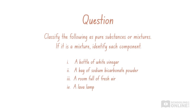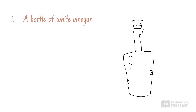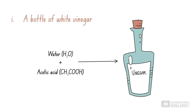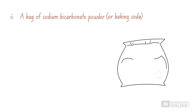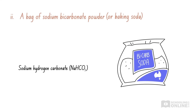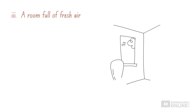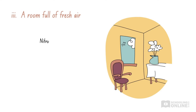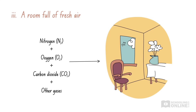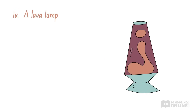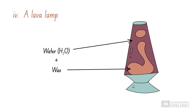A bottle of white vinegar contains liquid water and aqueous acetic acid. Therefore, white vinegar is a mixture. Sodium bicarbonate and baking soda are household names for sodium hydrogen carbonate. This is a solid compound made from several elements chemically combined. Therefore, sodium bicarbonate powder is a pure substance. A room full of fresh air contains different gases, including nitrogen, oxygen and carbon dioxide. Therefore, fresh air is a mixture. A lava lamp contains two liquids, water and melted wax. Therefore, a lava lamp contains a mixture.